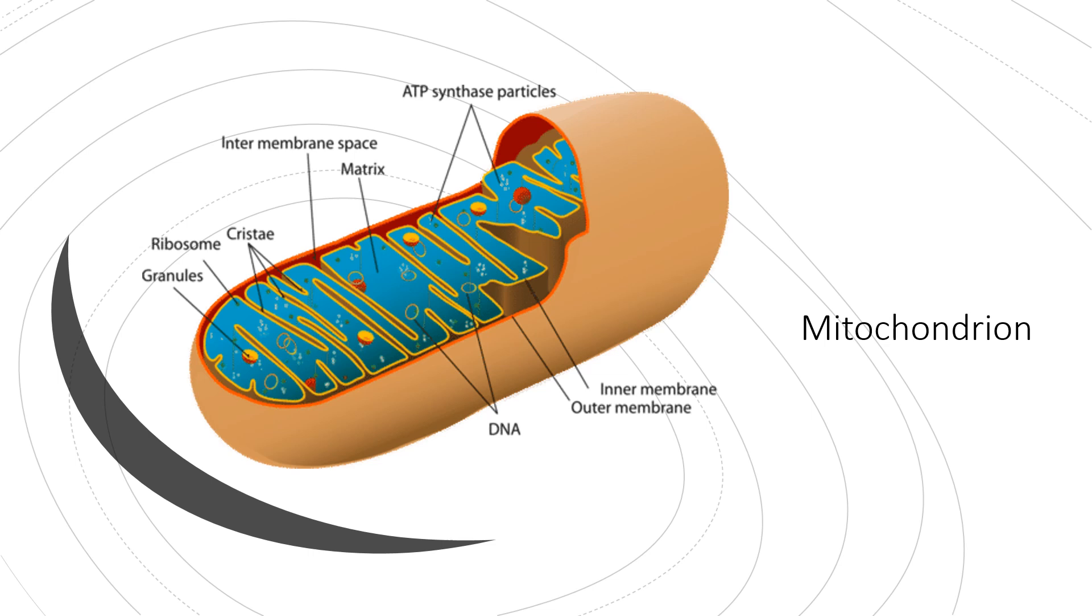And the third stage of cellular respiration, called the electron transport chain, takes place on the inner membrane.